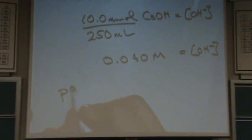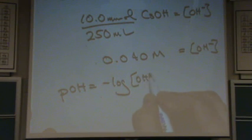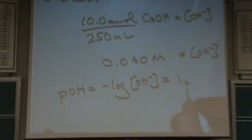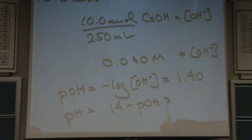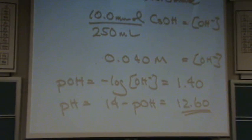The pOH is the negative log of OH minus. In this case, it's going to be 1.40. So the pH is 14 minus the pOH, which is equal to 12.6. There we go. There's the pH. Can you confirm that it, in fact, is a strong base region? Yeah. Yeah. It's a huge number. Close to 14. So it's definitely a strong base region.